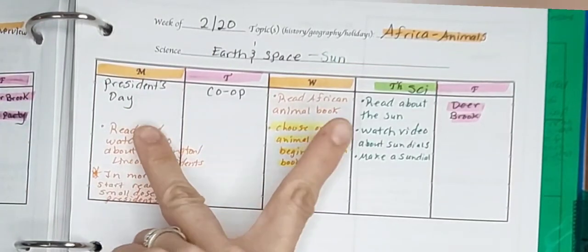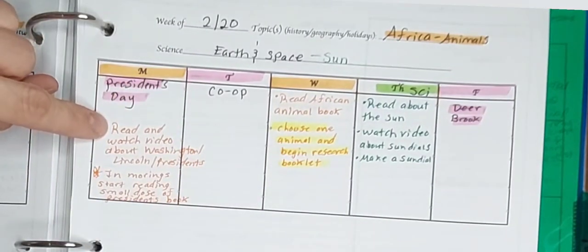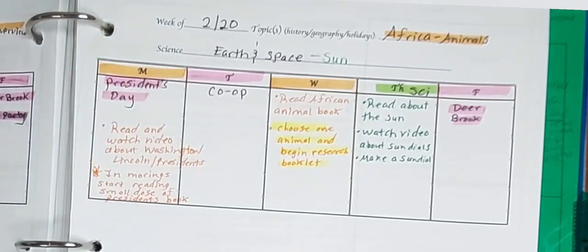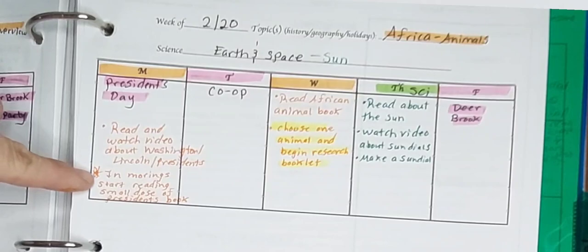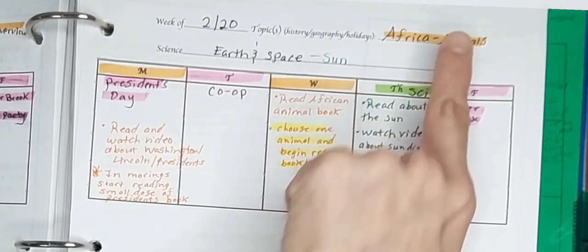For the next week for our orange or Africa unit days, this is a holiday. Going to read and or watch a video about either Washington Lincoln or President's Day. And I noted in the morning during morning basket time to start this little book we have that kind of has little quick summaries of each president. And our theme is African animals.